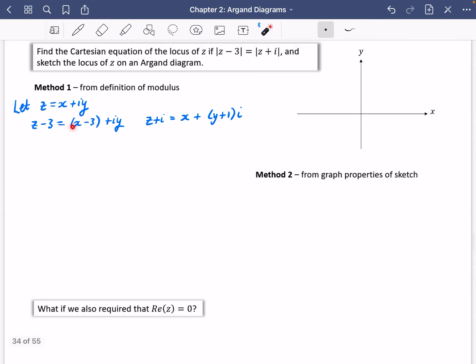So the modulus of Z minus 3 being equal to the modulus of Z plus I, I'm actually just going to find the modulus of this and the modulus of this. So it's going to be the square root of X minus 3 squared plus Y squared, the square root of X squared plus Y plus 1 squared. Now, you didn't have to write those square root signs because we knew that they were going to cancel on both sides. I'm going to go ahead and expand the brackets. So I get X squared minus 6X plus 9 plus Y squared equals X squared plus Y squared plus 2Y plus 1.